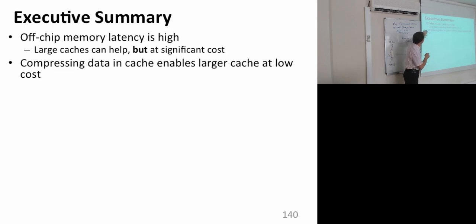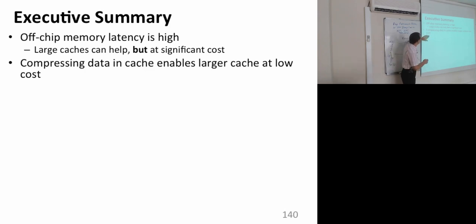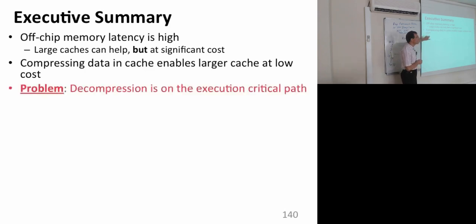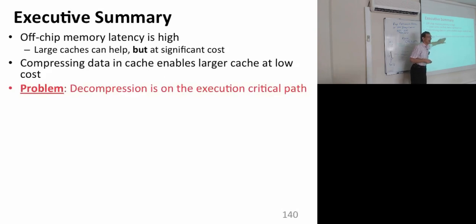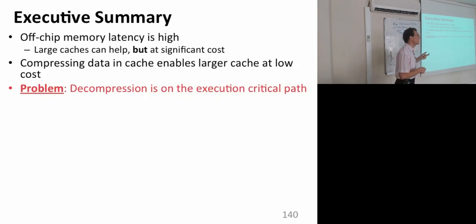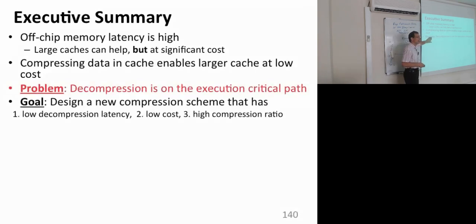What is the problem? Off-chip memory latency is high. Large caches can help, but we don't want large caches because that has a lot of other issues. Compressing data in cache enables a larger cache at low cost. The problem is whenever you compress data you need to decompress it, and this decompression is on the execution critical path. If your compression algorithm is not amenable to fast decompression, you can actually degrade performance.